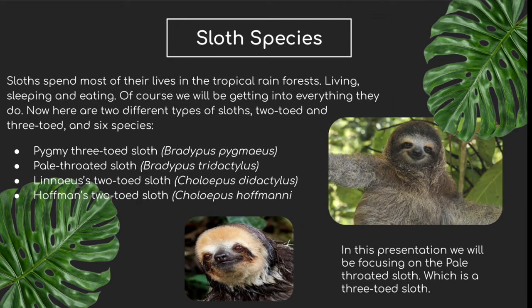So we're going to go ahead and talk about sloth species as some background information. Sloths spend most of their lives in the tropical rainforests. They live, sleep, and eat on top of really high trees. There are two different types of sloths — the two-toed and the three-toed — and in total that makes six species. A couple listed here include the pygmy three-toed sloth, the Linné's two-toed sloth, and the Hoffman's two-toed sloth. In this presentation, we're going to be focusing on the pale-throated sloth.